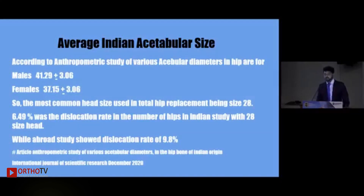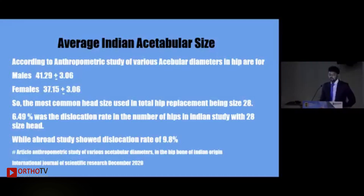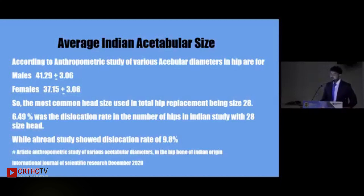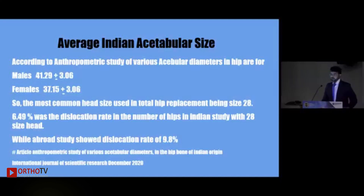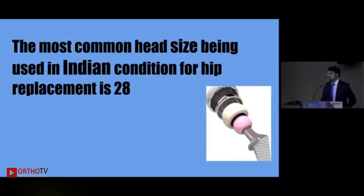According to anthropometric studies done in India, the average Indian acetabular size in males is 41.29 ± 3.06 mm, and in females it is 37.15 ± 0.3 mm. So the most common head size used in total hip replacement in India is 28 mm, which carries a 6.49% dislocation rate. Indian studies show a dislocation rate of up to 9.8% with the 28 mm head, which is the most commonly used size for hip replacement in Indian conditions.